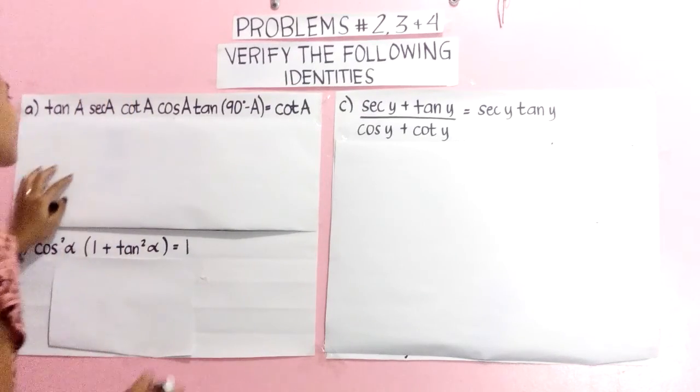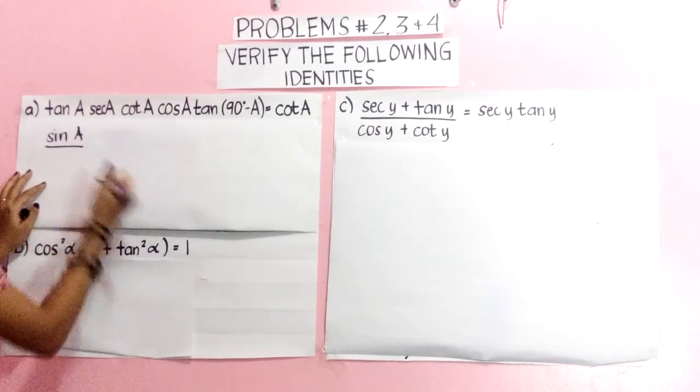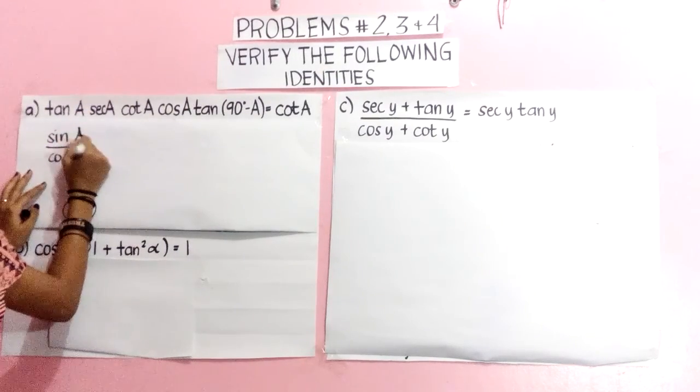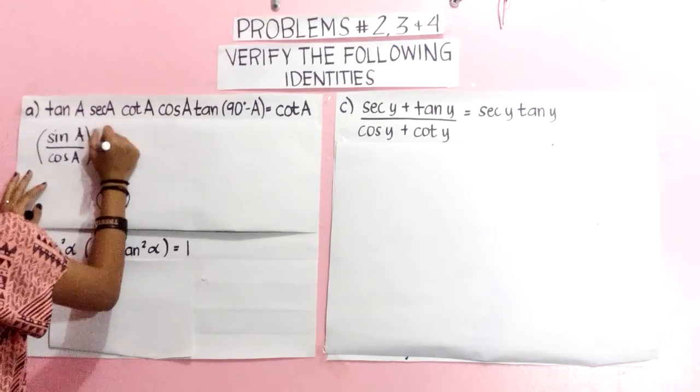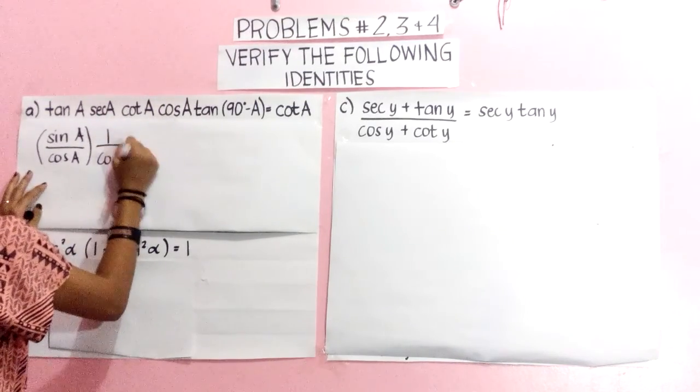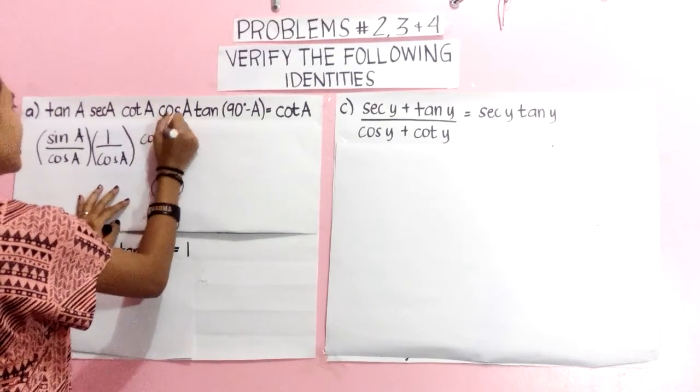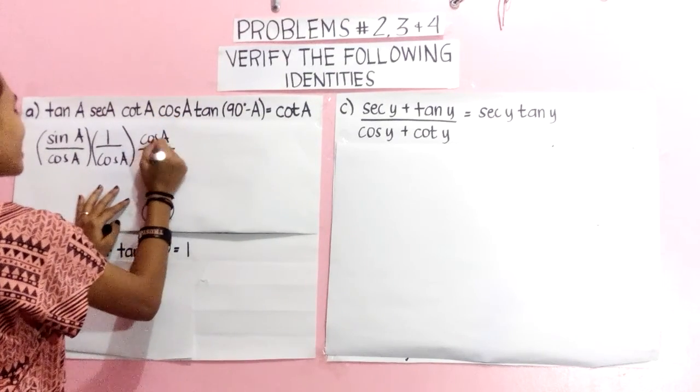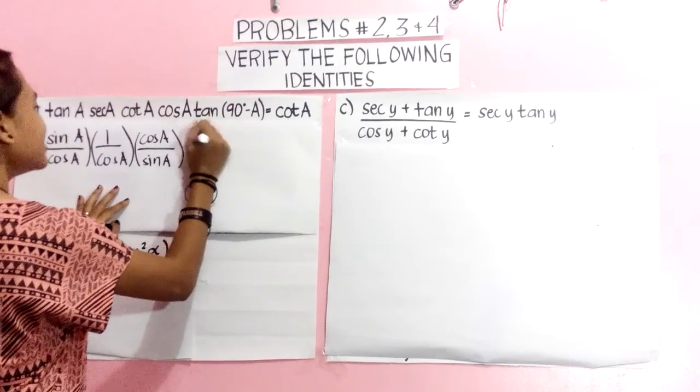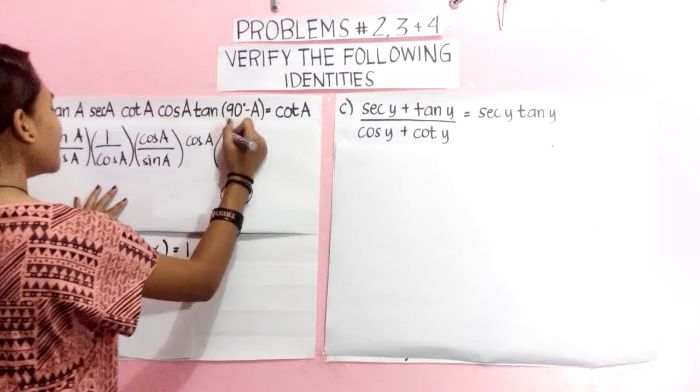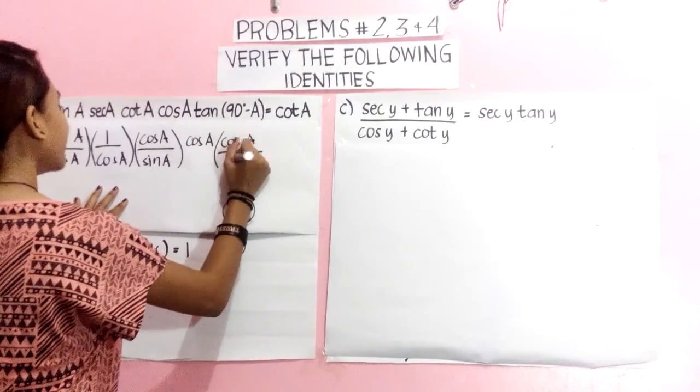Tan A is equal to sin A over cos A. Sec A is equal to 1 over cos A. Cot A is equal to cos A over sin A. So cos A remains the same, and tan(90 degrees minus A) is equal to cos A over sin A.